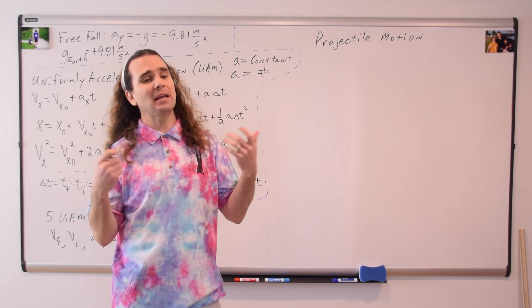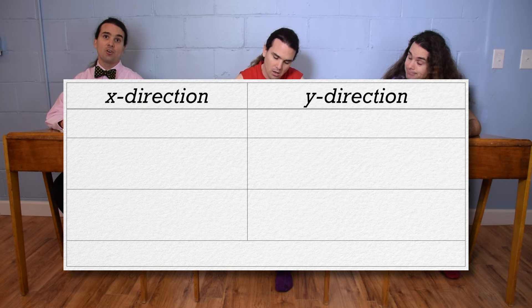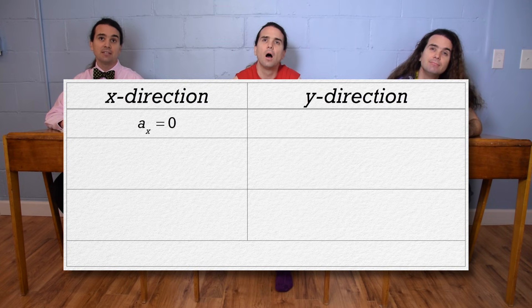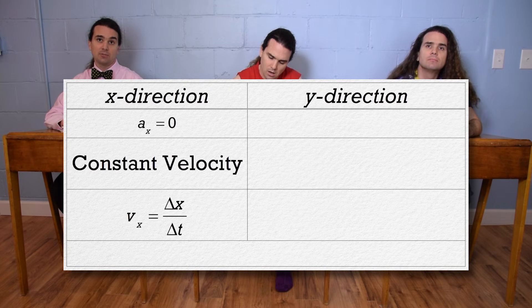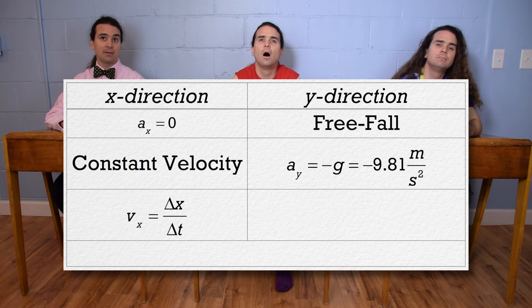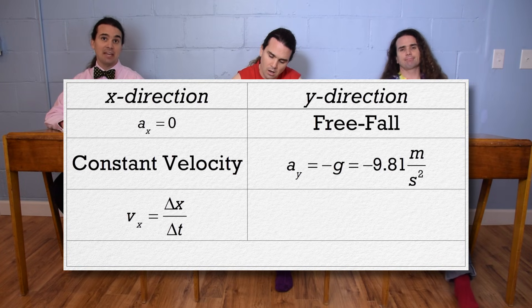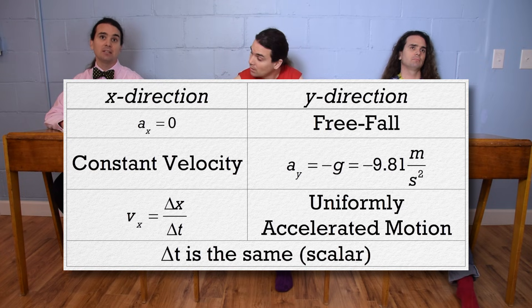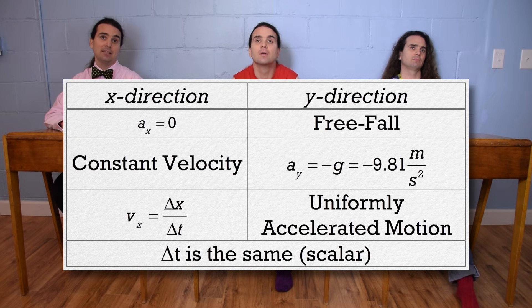Billy, what is projectile motion and how do we solve projectile motion problems? Projectile motion is when an object is flying through the vacuum you can breathe in at least two directions. We start by splitting our known variables into the x and y directions. In the x direction, the acceleration is zero, so the velocity is constant. And we can use the equation velocity equals change in position over change in time. In the y direction, the object is in free fall, so we know the acceleration equals the negative of the acceleration due to gravity, which is then negative 9.81 meters per second squared. And we can use the uniformly accelerated motion equations in the y direction. We also know that the change in time variable is the same in both directions because it is a scalar. So that is what connects the x and y directions.